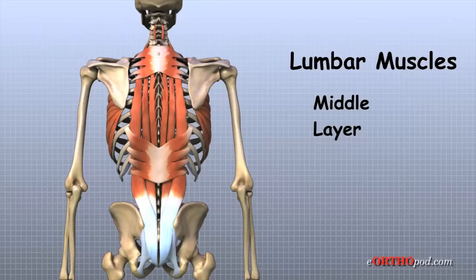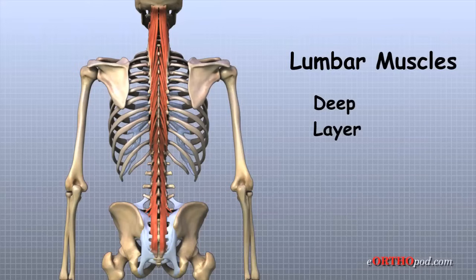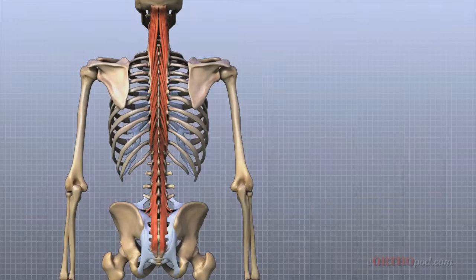They blend in the lumbar spine to form a thick tendon that binds the bones of the low back, pelvis, and sacrum. The deepest layer of muscles runs along the back surface of the spine. These muscles connect the lumbar vertebra, pelvis, and sacrum and coordinate movement with the muscles of the abdomen to help hold the spine steady during activity.